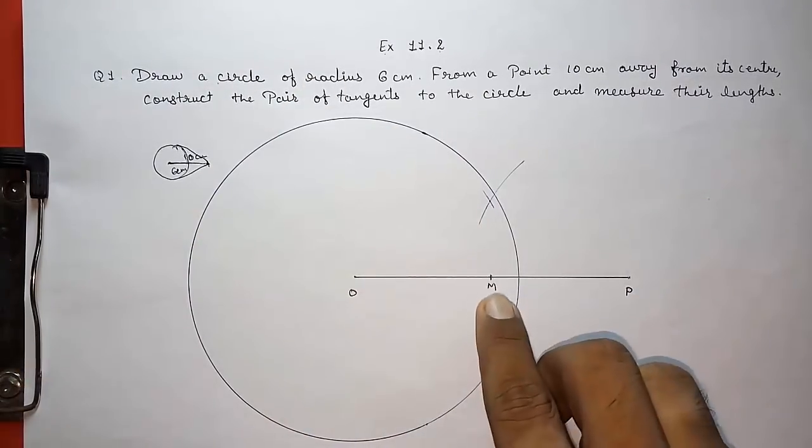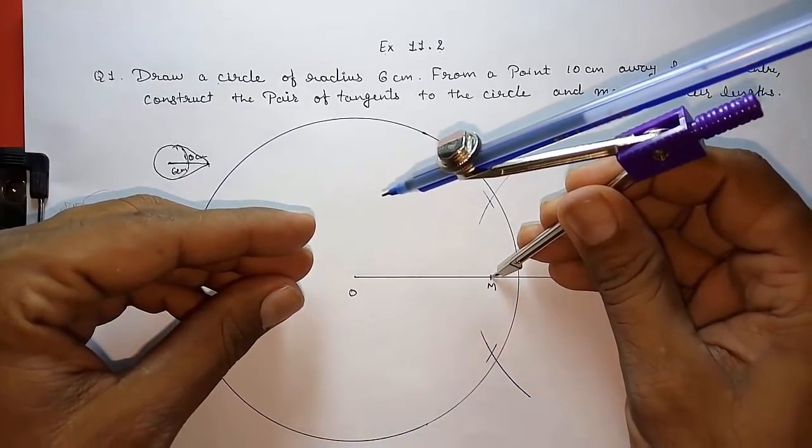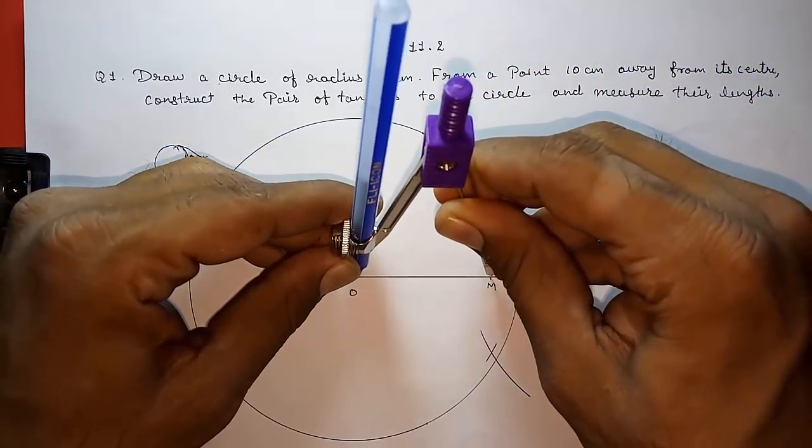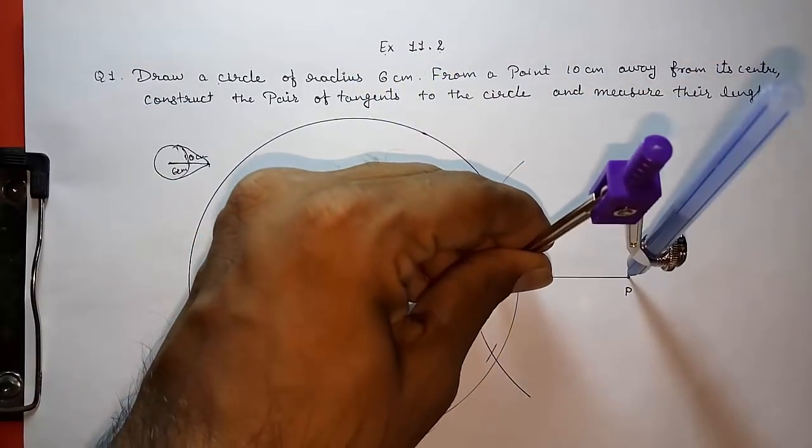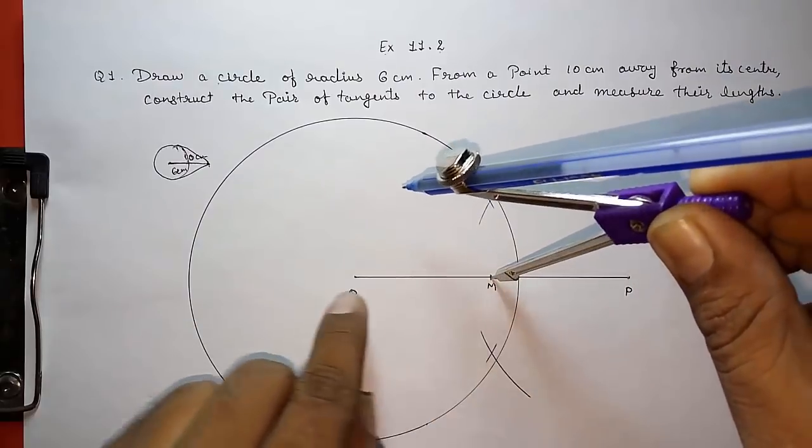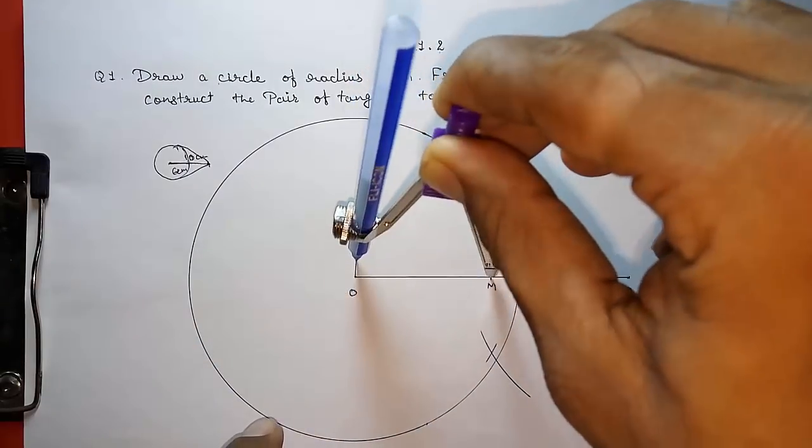Taking MO as the radius. I am checking if it is proper or not. Yes it is proper. Taking M as the center and MO as the radius, draw another circle.